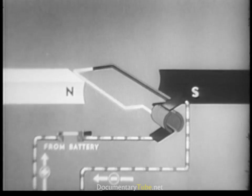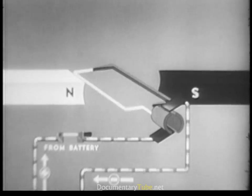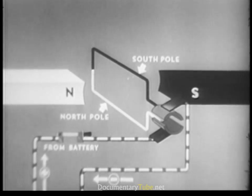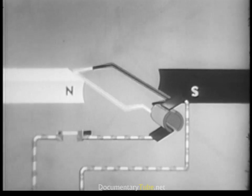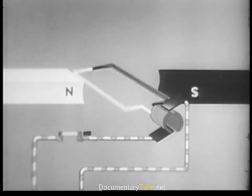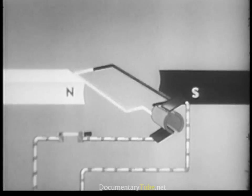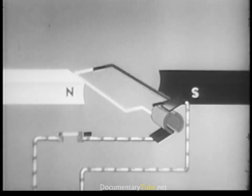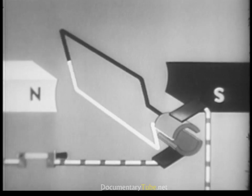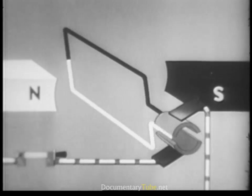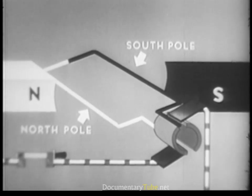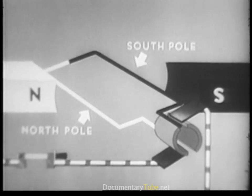As soon as current starts to flow through the wire loop, it becomes an electromagnet with a north pole and a south pole. As we have already mentioned, the north pole of the loop tries to get as close as possible to the south pole of the bar magnet. Just before the loop becomes aligned, each segment disconnects from one brush, momentum carries the loop past its objective, and the segments connect with another brush. This changes the direction of the current in the wire loop, which in turn changes the loop's polarity.